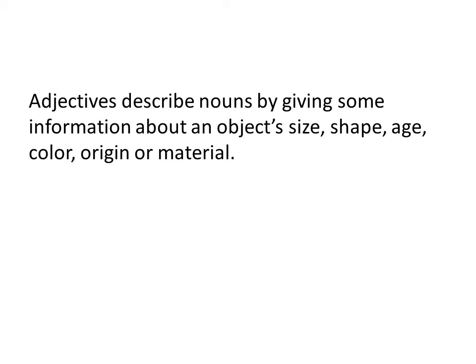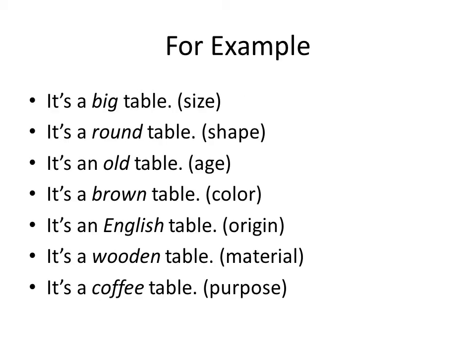Furthermore, adjectives describe nouns by providing information about an object's size, shape, age, color, origin, and material. The word 'origin' means the start and beginning of something — some idea, object, or happening. Here are examples: 'It is a big table,' 'it is a round table,' 'it is an old table,' 'it is a brown table,' 'it is a wooden table,' 'it is an English table,' 'it is a coffee table.' The word 'big table' tells us the size of the table.